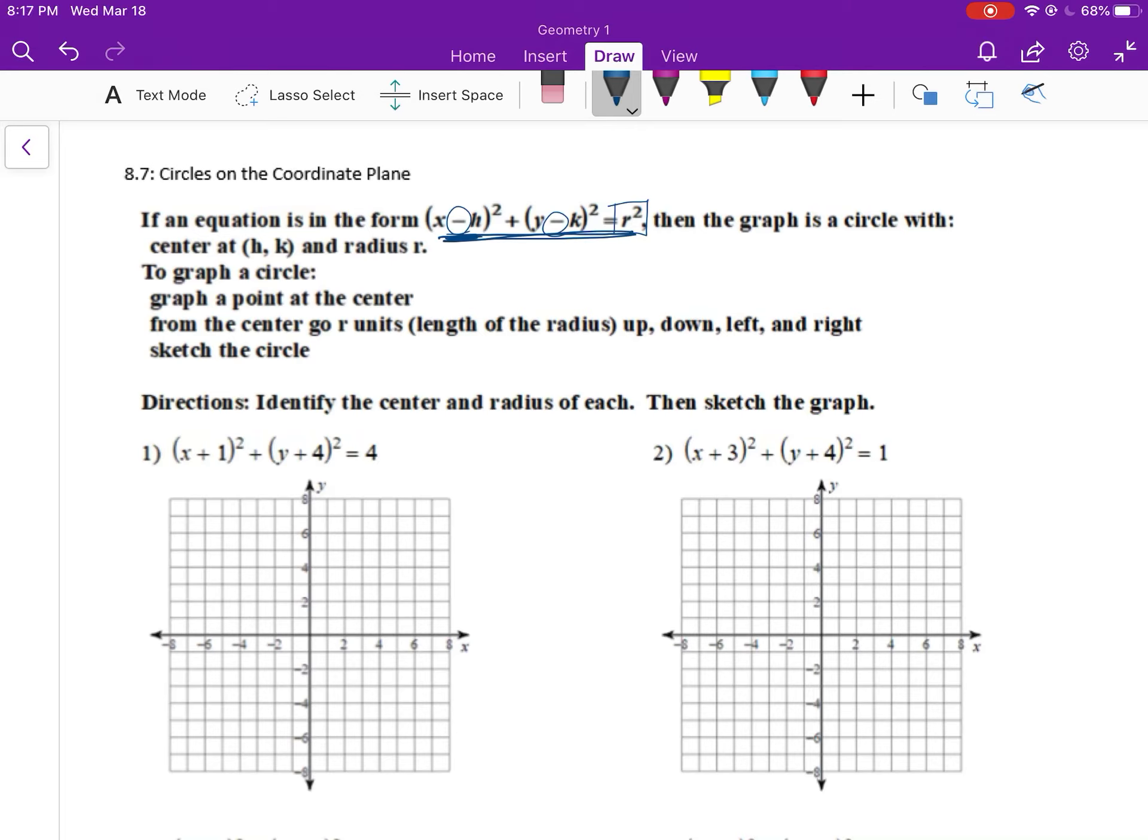So the center is at (h,k). Really, once you look inside here, it's going to be the opposite of what's written here. And whatever number's over here, you need to take the square root of whatever number's on the right to get your radius, because this is the radius squared over there, not just the radius.